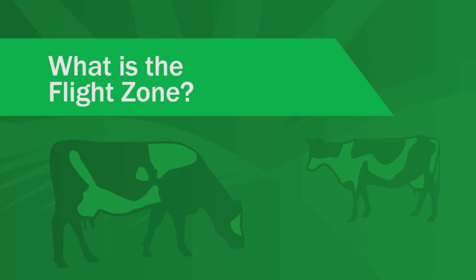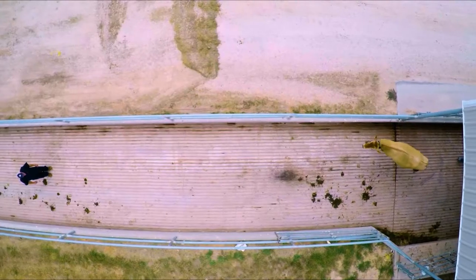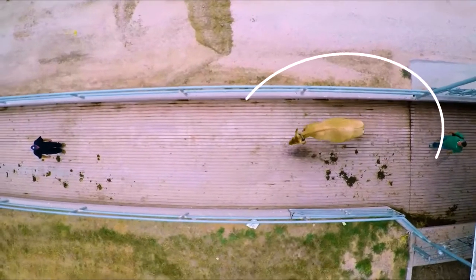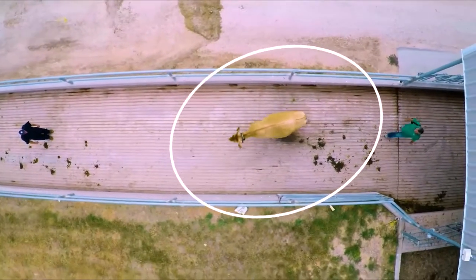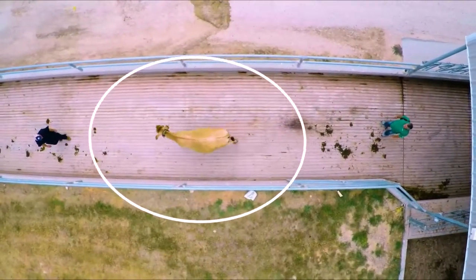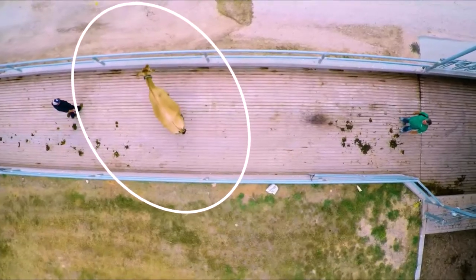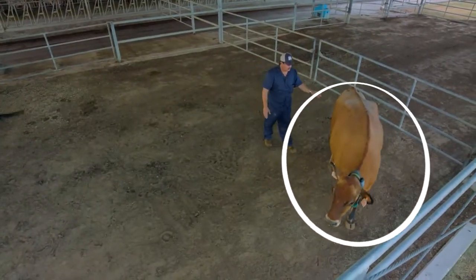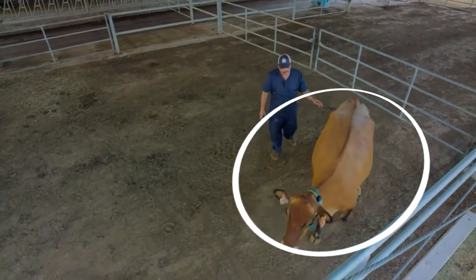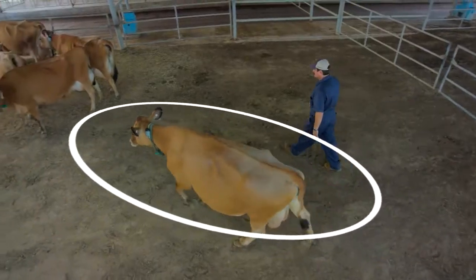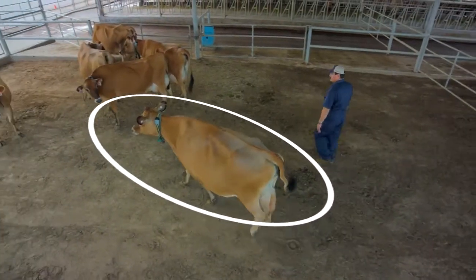What is the flight zone? The flight zone is the animal's safety zone. It is an imaginary zone or space around the animal. The flight zone can vary in size depending on the animal's degree of comfort being around humans.